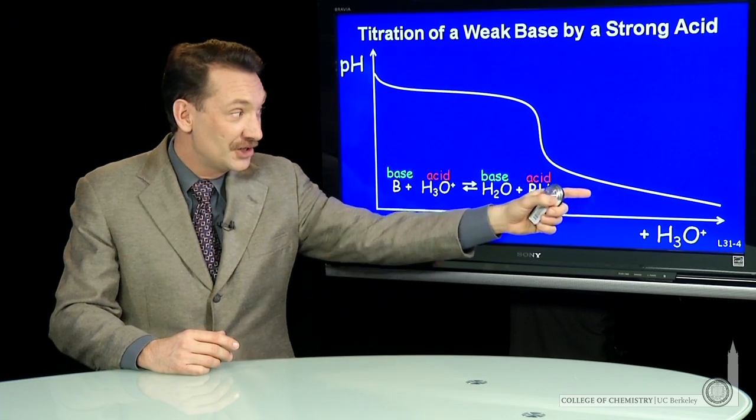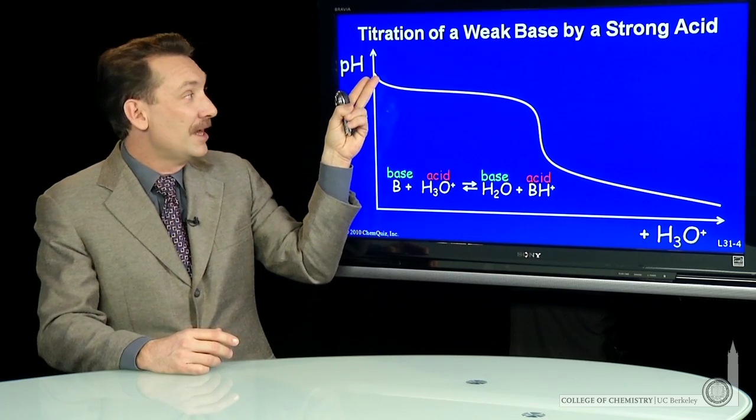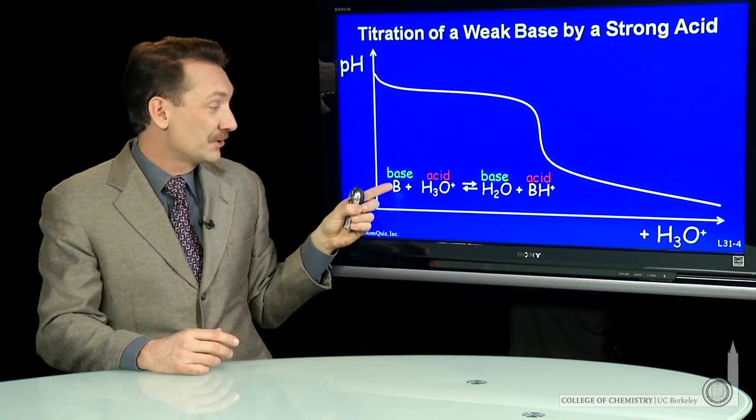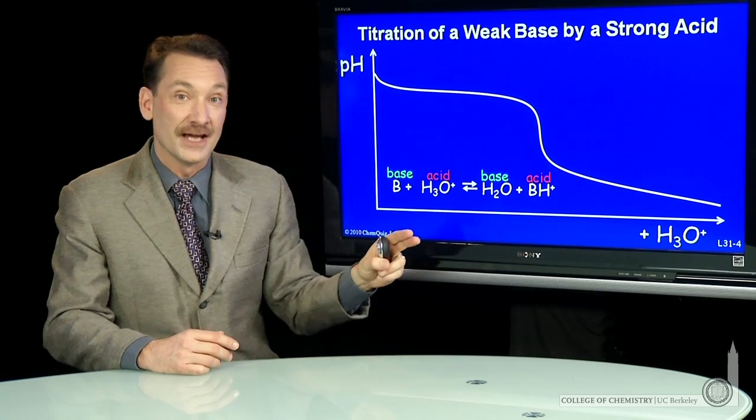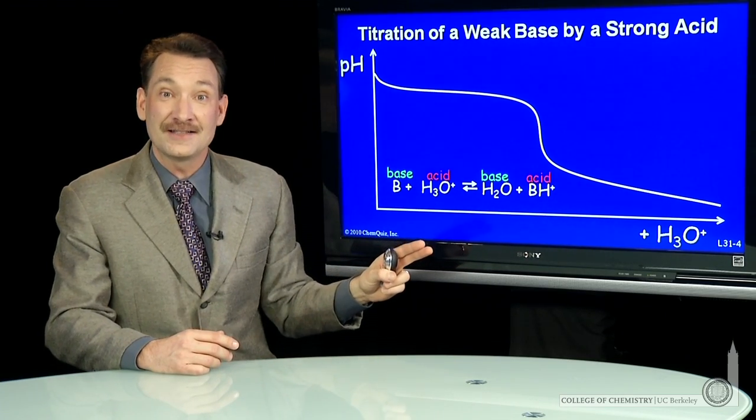As you titrate, the shape of the curve will be high pH to start because we're starting with a base solution and going towards low pH because you're producing an acid solution.